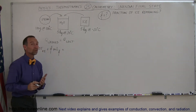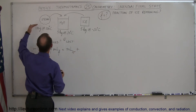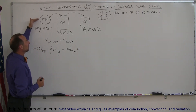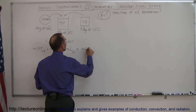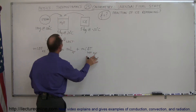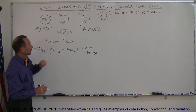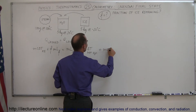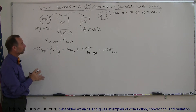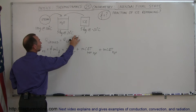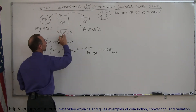That equals all the things losing heat. First, the steam loses heat by condensing into water, so we have M times the latent heat of vaporization. Then the water that came from the steam goes completely down to 0 degrees — we're assuming the final state is an ice-water mixture — so we add MC delta T for the hot water. Then we also add MC delta T for the regular water already in the bucket, the cold water, going from 20 down to 0.